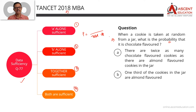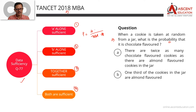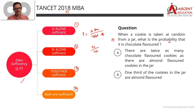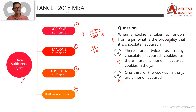How many cookies are in the jar? 100, 50, 70 — whatever that number is, that is going to be the denominator. In the numerator, the favorable case is the number of chocolate-flavored cookies. For example, if we have 100 cookies in the jar and 72 chocolate-flavored cookies, the required probability will be 72 upon 100. So in the two statements, if we have a numerator and denominator, the data is sufficient.